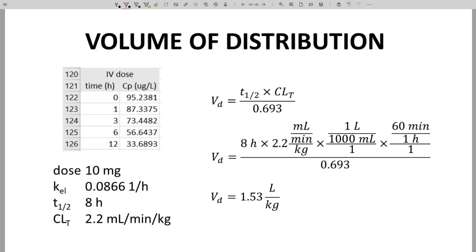Volume of distribution is one of the last pharmacokinetic parameters that gets calculated from CP time data. Here is a CP time data table from a previous video along with some parameters that can be determined from these data.